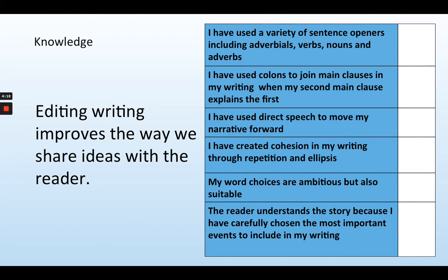Moving down to the fifth row, we should also have word choices in our writing that are ambitious but are suitable, which means they make sense. Please make sure Year 6 that you are only using words in your writing that you know the meaning of. And finally in our sixth row, our final item on the checklist is to make sure that the reader understands the story because you've carefully chosen the most important events to include. It's not possible for us to include every single event that happened throughout the story, so you need to be sure you've picked out the most important events for your writing.